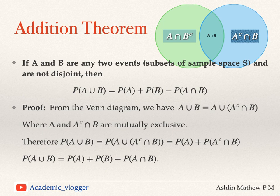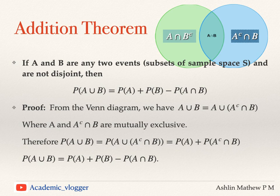From the Venn diagram, A-complement intersection B is the total blue circle from which A intersection B is removed. So we can write probability of A-complement intersection B as probability of B minus probability of A intersection B. Therefore, probability of A union B equals probability of A plus probability of B minus probability of A intersection B.